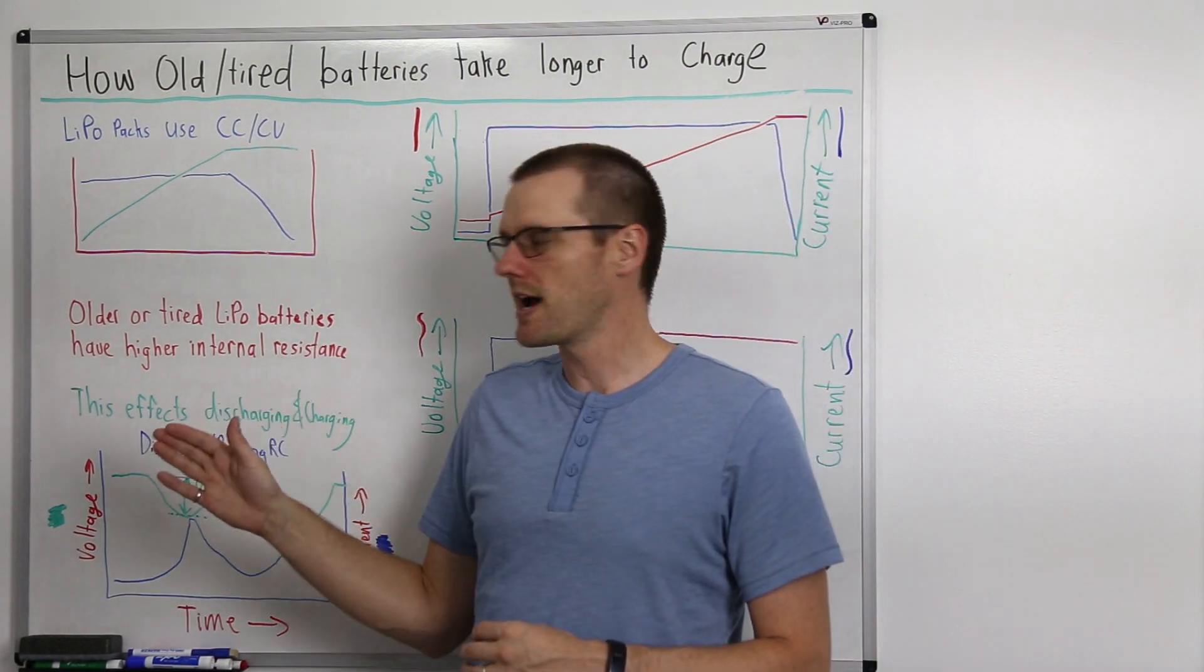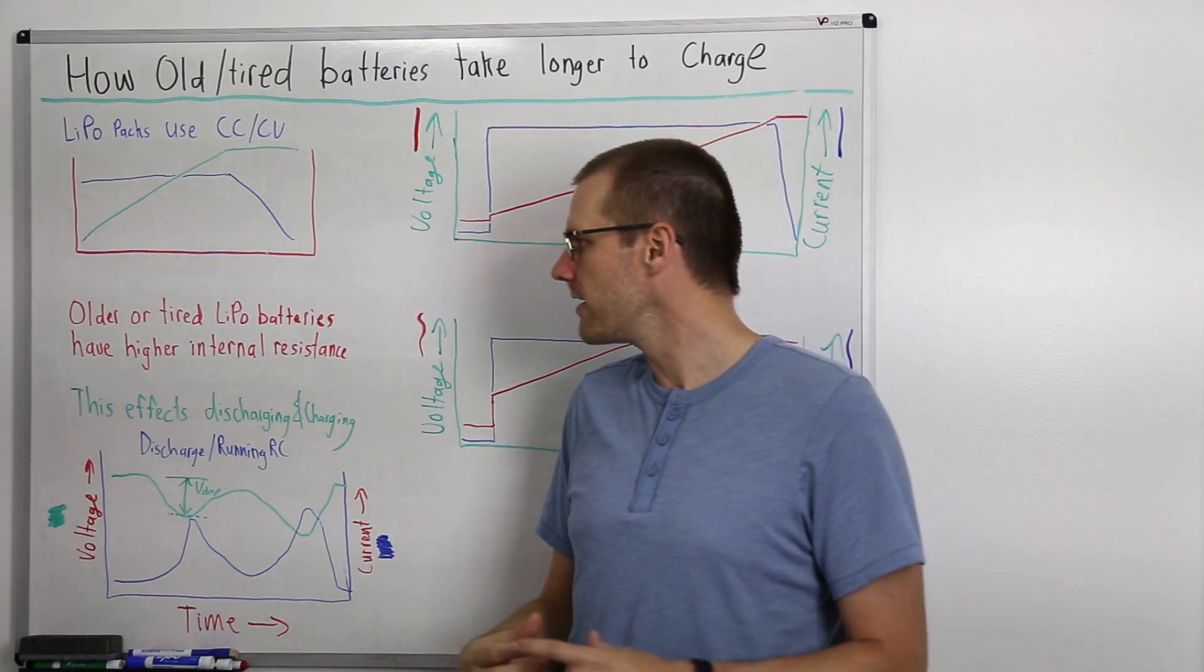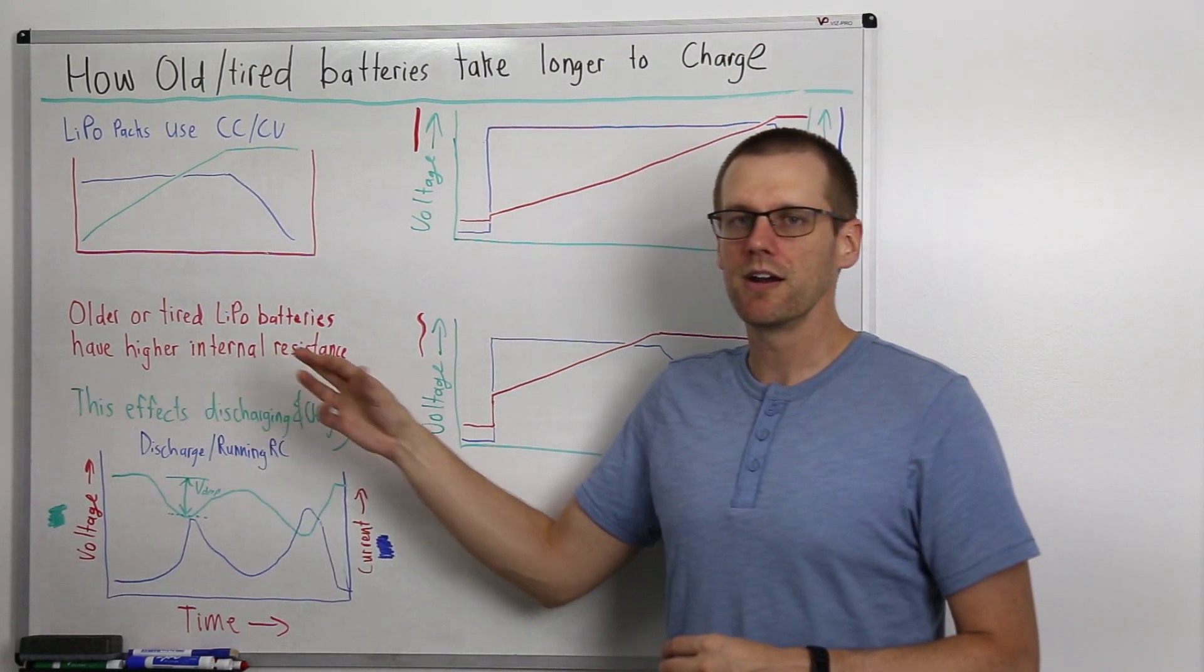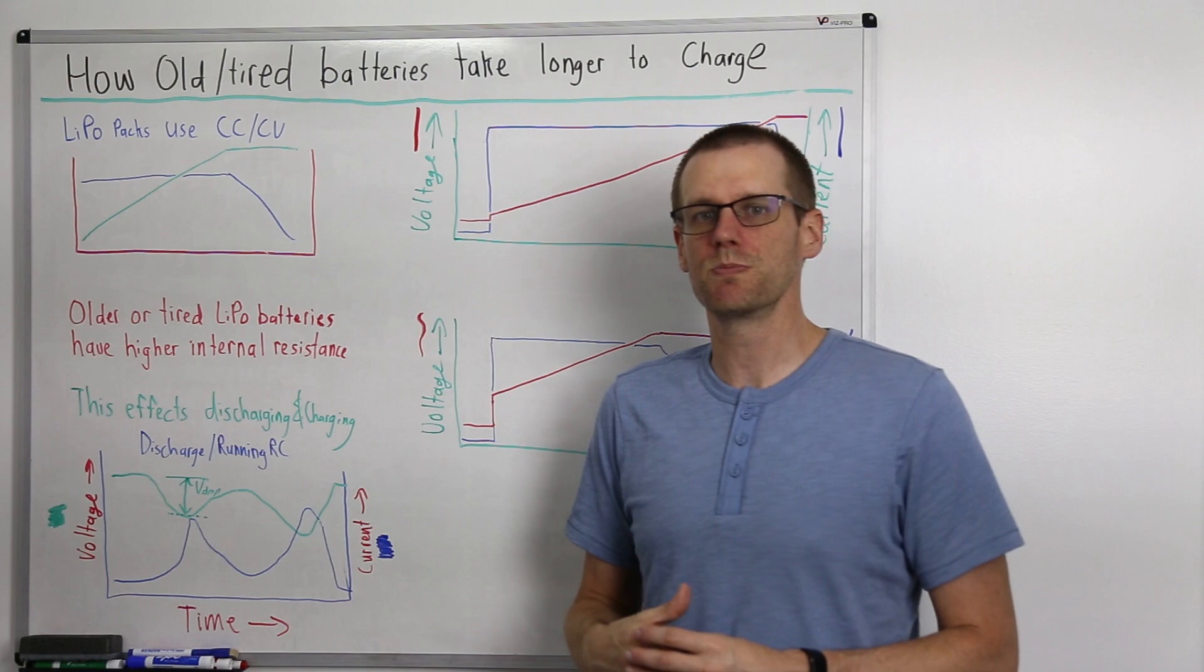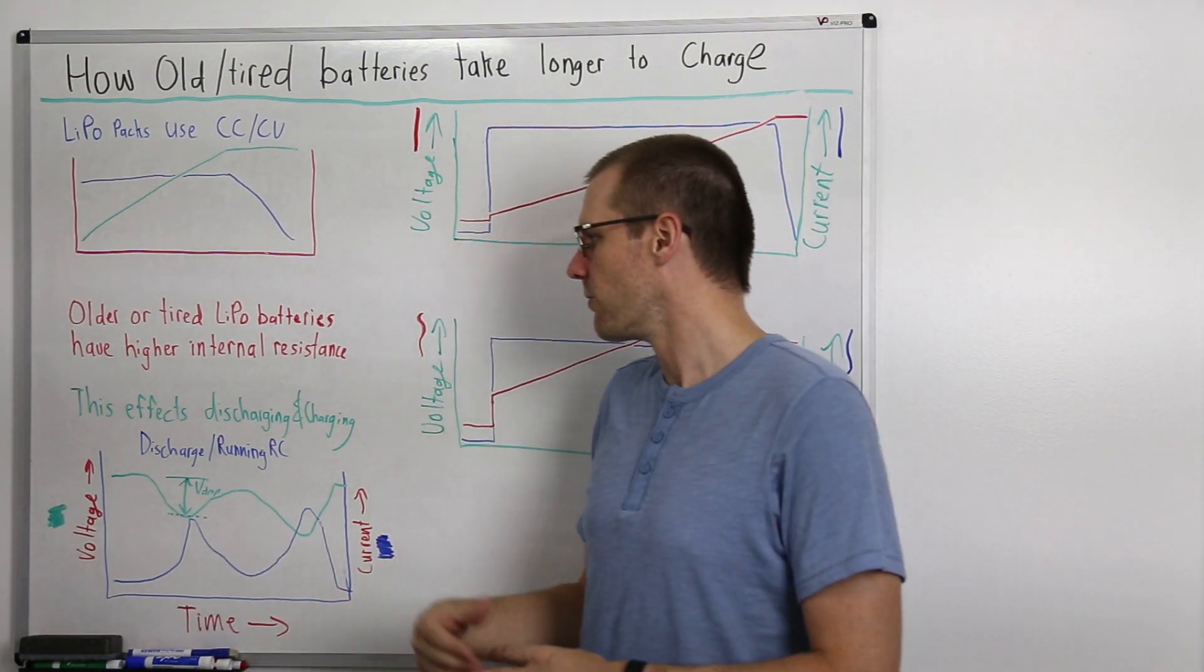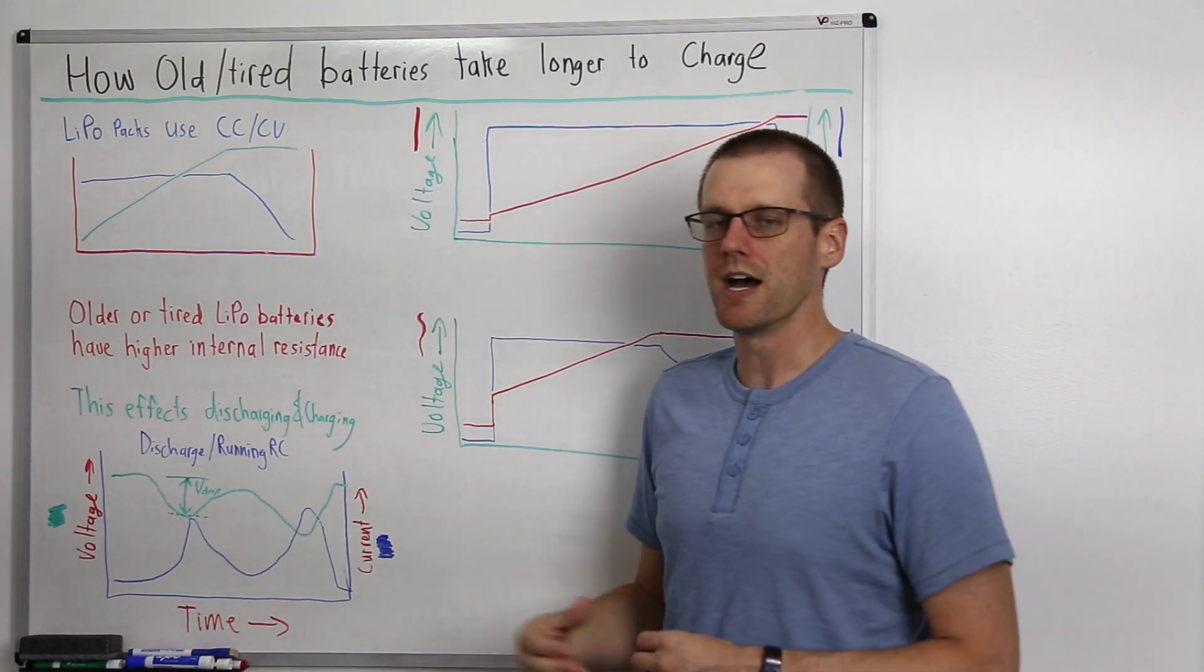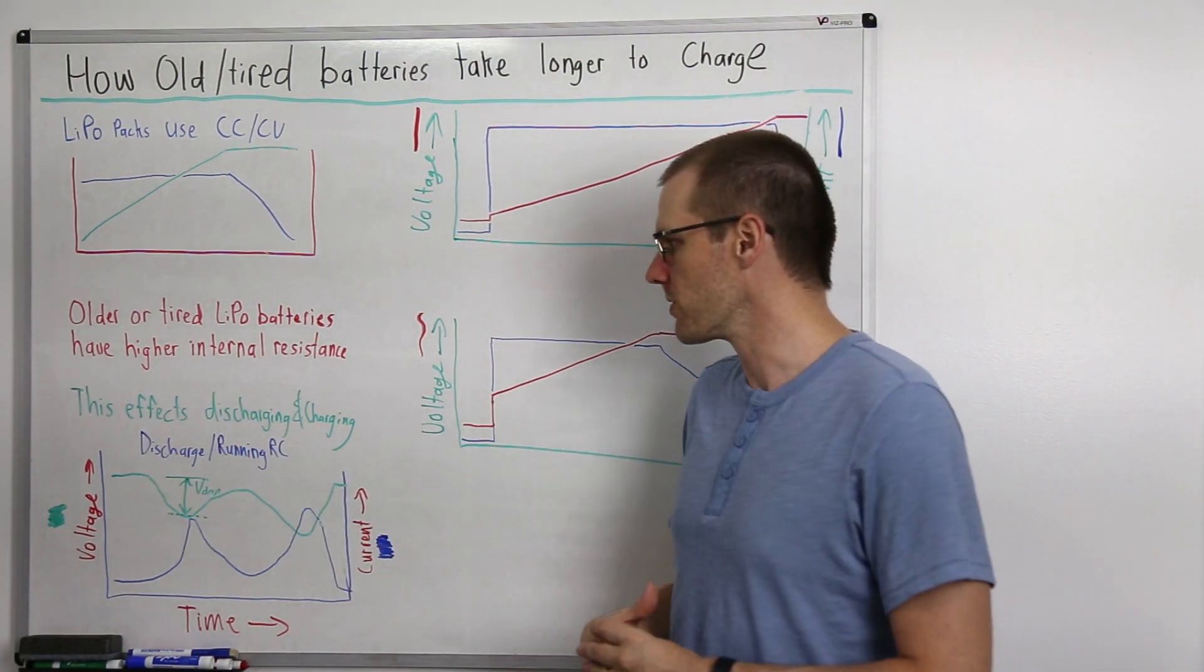The next thing we need to look at is internal resistance. Older or tired LiPo battery packs have higher internal resistances by the nature of how we use them and how they degrade over time. This affects both discharging as well as charging.